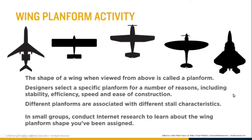The wing planform is the shape of the wing as viewed from above, and different planforms have different stall characteristics. The rectangular wing has really good stall characteristics — it stalls at the root first even without any wing washout or twist, making it good for training aircraft and cheap to manufacture, though it's not a very efficient wing. The elliptical wing, famously used on the Spitfire, is one of the most efficient wings available but tends to stall suddenly and all at once, giving it bad stall characteristics.